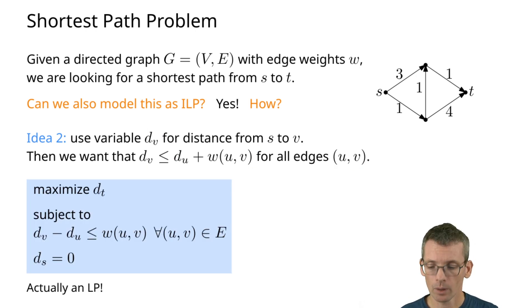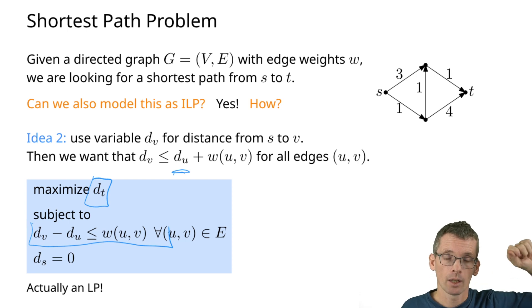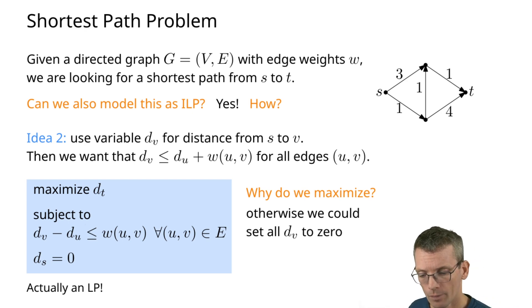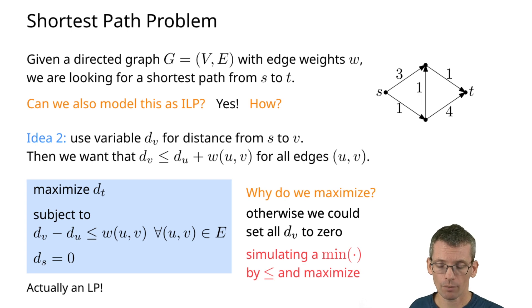How do we force d_v to be as large as possible? We simply use maximization. So we now maximize d_t subject to these constraints. Here we have d_u on the other side, so we have d_v minus d_u smaller or equal to the weight. With this we always make sure that we stay below that minimum, and the max pulls it up to actually fulfilling this minimum constraint exactly. The solution to this gives us the distance to t, and of course we should start with a distance of 0 for s to itself. Why do we maximize? Because if we wouldn't be maximizing, then simply setting everything to 0 would work. The reason why we have this combination of smaller or equal with maximum is because this allows us to simulate a minimum that we would actually want to have when formulating this problem.